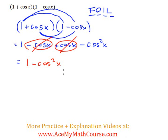Are we done here? Actually, no. We can convert this into sin squared x. And why is that? Because of the Pythagorean identity.